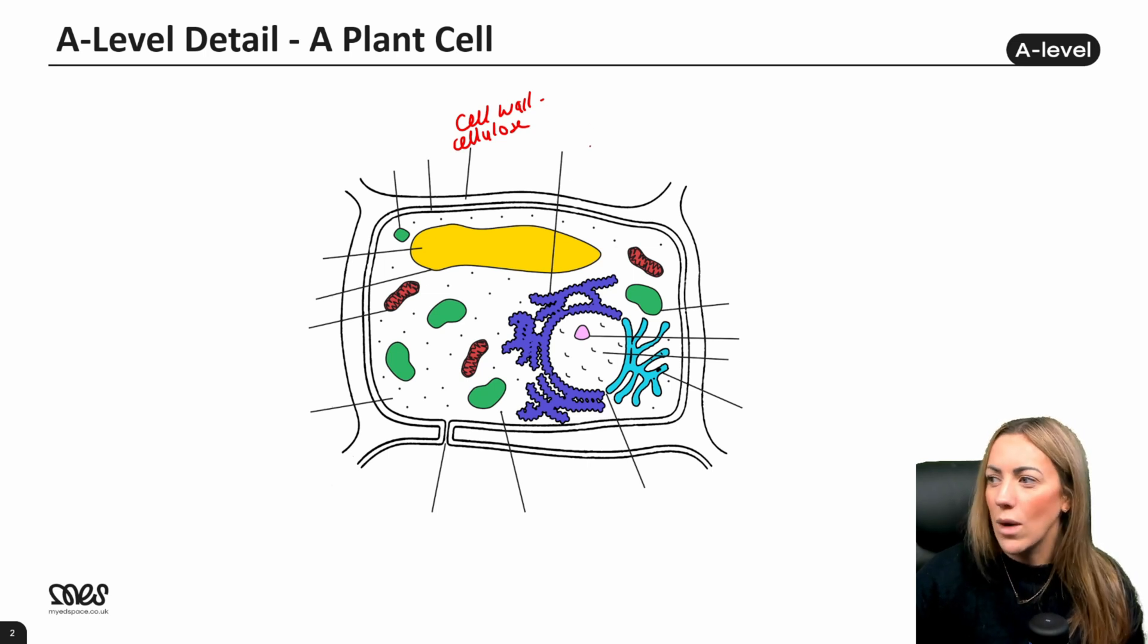Let's go around in a clockwise direction. Here we've got the rough endoplasmic reticulum. We know it's rough because it's covered in ribosomes. It's made of flattened membrane bound sacs or cisternae and it is actually continuous with the outer membrane of the nucleus. Moving around here, I'm going to guess it's a chloroplast because it's green, but I will show you in a second another way to identify chloroplasts when we look at their actual structure.